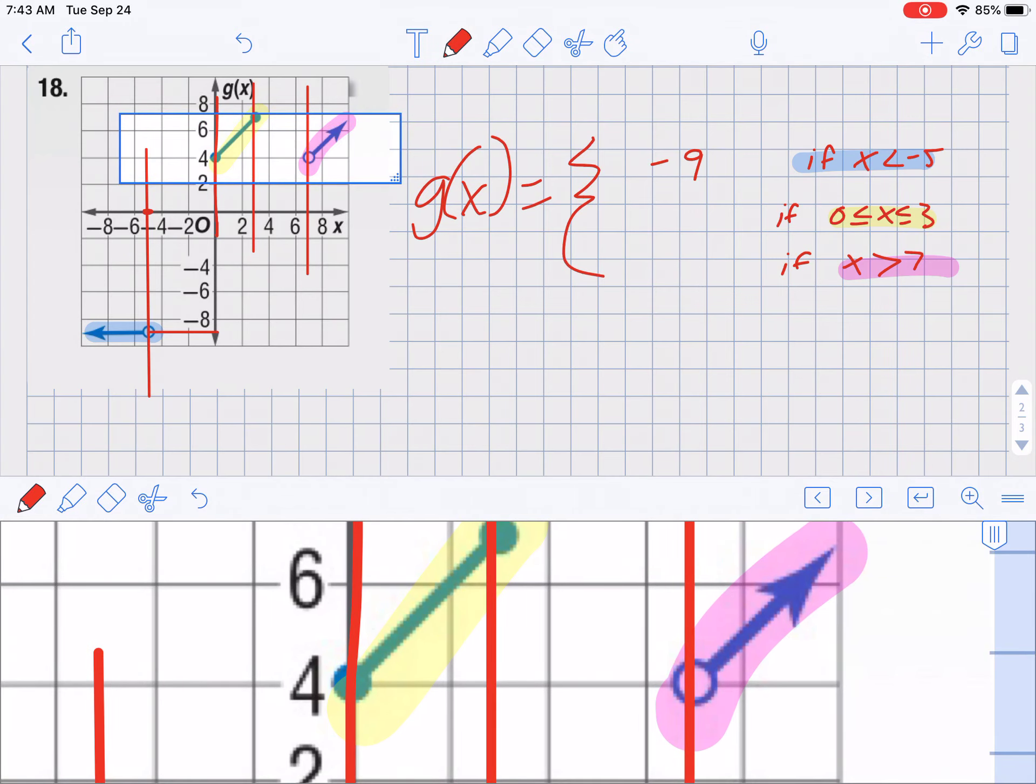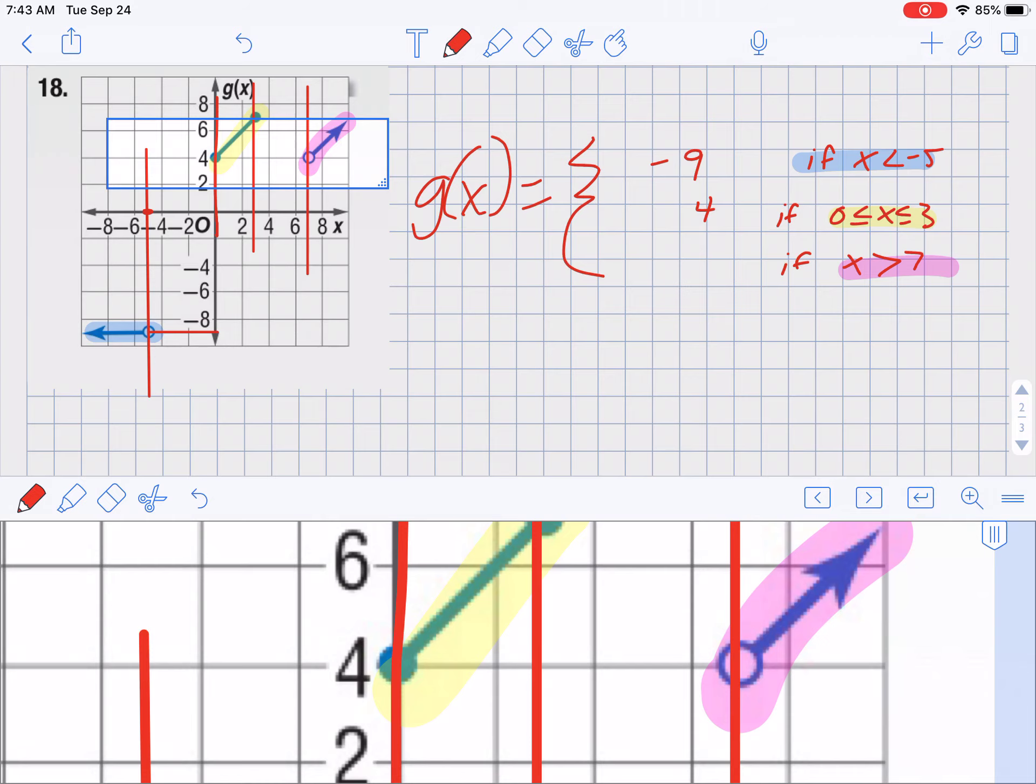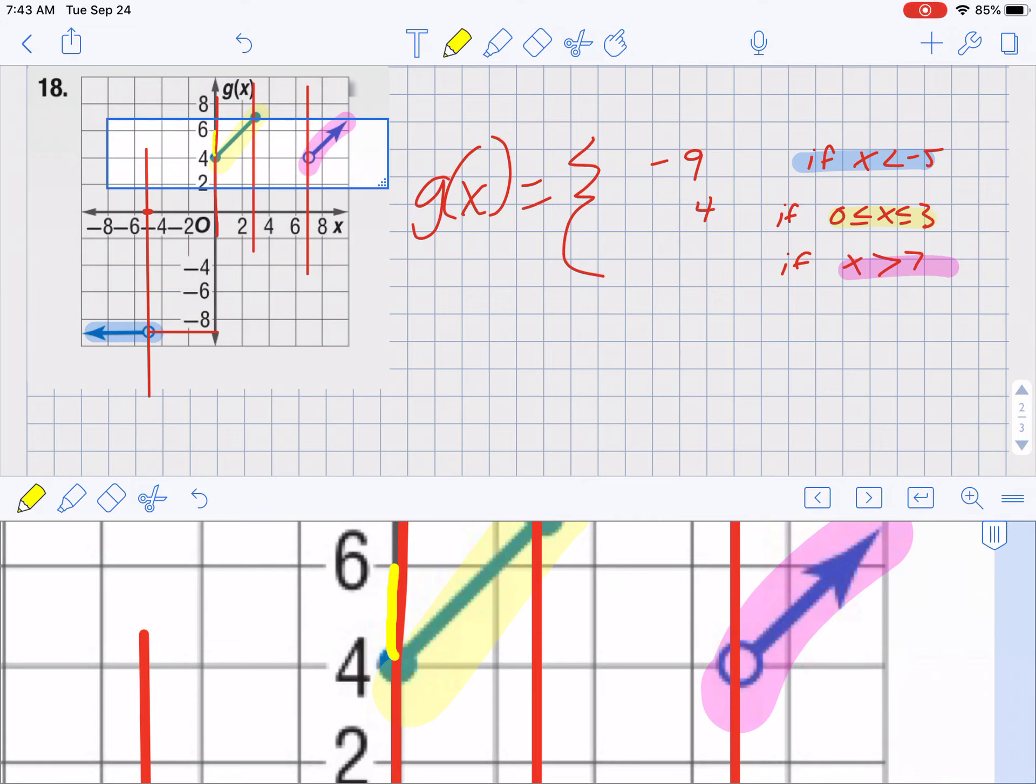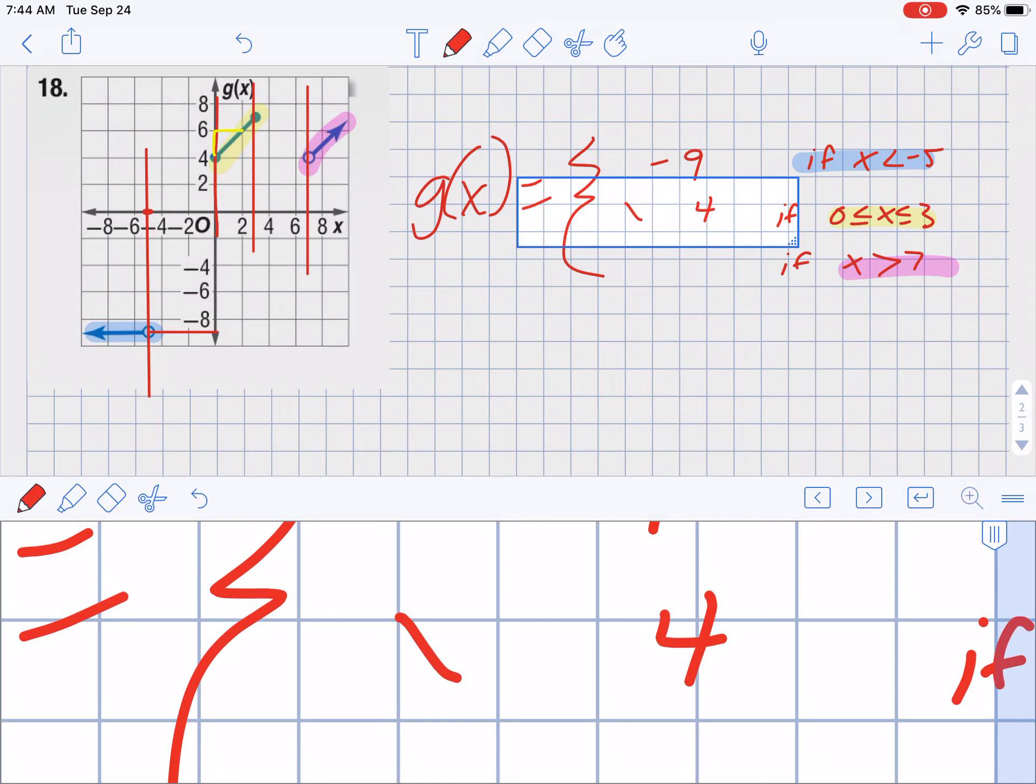For this next one, my Y-intercept is 4. Now I have to find my slope. So if I go from here and I go up, that was up 2. And then over to this point is over another 2 because the grids go by 2s. That's up 2 over 2. So 2 over 2, which is just 1. So I could write 1x or just x plus 4 for the second one.